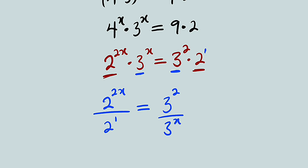And this is equal to 3 to the power of 2 divided by 3 to the power of x. So we have divided both sides by 3 to the power of x and 2 to the power of 1.